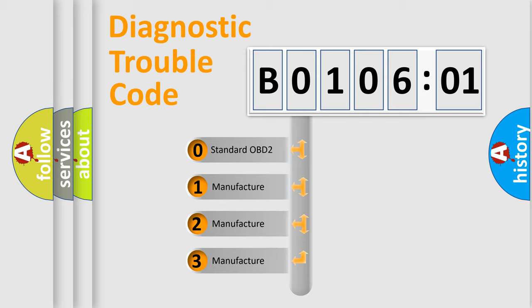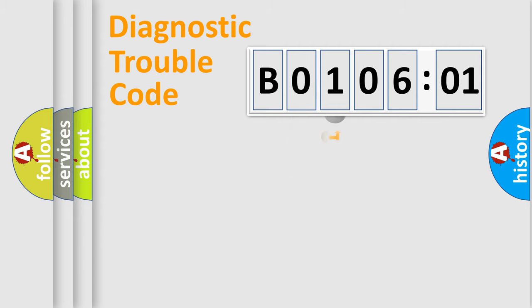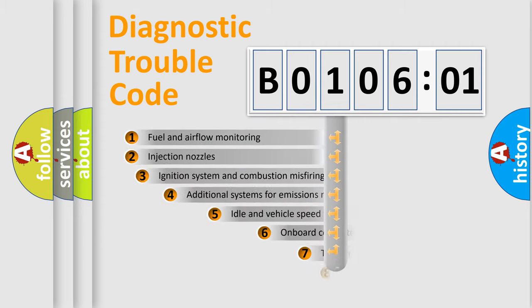If the second character is expressed as 0, it is a standardized error. In the case of numbers 1, 2, or 3, it is a more prestigious expression of the car-specific error.